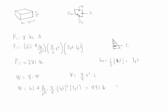Now let's evaluate the position at which the vertical force acts — we'll call it h2. This is a horizontal dimension equal to the location of the centroid in that quarter-circle section, which is 4r/3π. Entering the values, we find that h2 is equal to 1.27 feet.